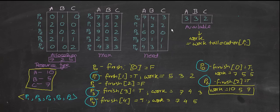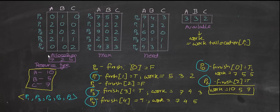The available matrix is usually given. When it's not given, you have the total resources for resource types A, B, and C. You subtract the total allocation — which is the sum of allocations for A, B, and C — from the total resources to get the available matrix.